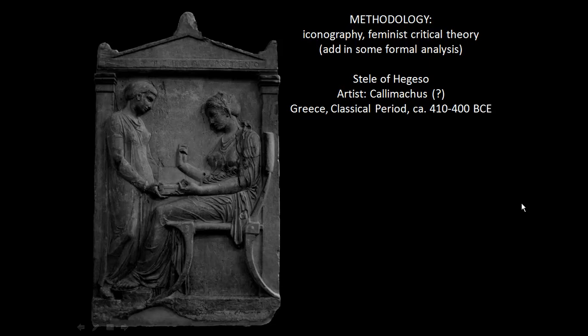Let's do one more example of iconography and feminist critical theory by looking at the Stele of Hegeso. This is a grave stele — a grave marker similar to our tombstones today — but with a very beautiful sculpture on the front. We're looking at a woman who is seated, with what is probably a servant bringing her jewels, and she is looking at those jewels.